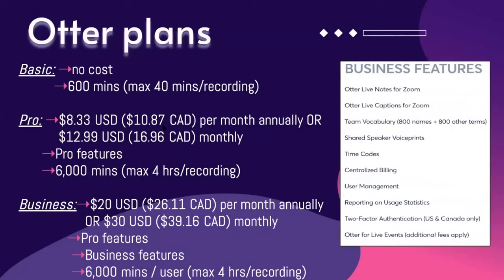Looking at the plans in more depth: the Basic plan is no cost with 600 minutes and a maximum of 40 minutes per recording. The Pro plan has different prices based on U.S. and Canada — in the U.S. you can get it for $8.33 or $12.99 depending on the plan you choose, and in Canada for $10.87 or $16.96 per month. It includes Pro features, 6,000 minutes, and a maximum of four hours of recording.